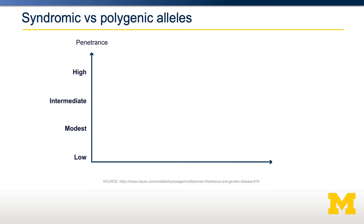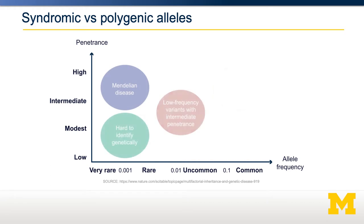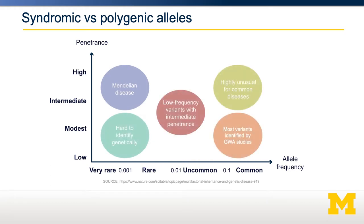Another axis is whether an allele is rare or common in the population. A very rare allele might exist in only one in a million people, whereas a very common allele might exist in up to half the population. Most of what we know about obesity comes from either high penetrance rare alleles identified from pedigree studies, or low penetrance common alleles identified by GWAS studies.